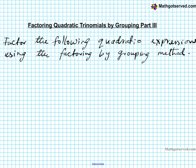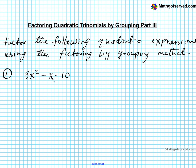Question number one: we're going to be dealing with 3x squared minus x minus 10. So you have a quadratic trinomial here. The goal is to make this into four terms so I can group the first two together and the last two together. So how do I make this into four? I focus my attention on the middle term, and I want to break this middle term into two terms — two terms that add or subtract to give you this and have a common factor.